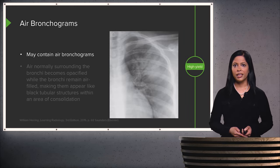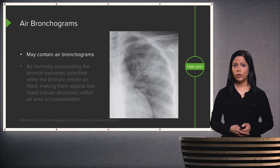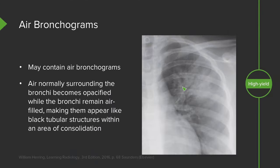Let's go over some signs of consolidation. When you have an area of consolidation, it appears white on a chest x-ray and may contain what we call air bronchograms. The air that normally surrounds the bronchi becomes opacified and appears white, while the bronchi remain air-filled, making them appear as black tubular structures within the consolidation. This area in the left upper lobe shows those linear black tubular structures representing air bronchograms — one of the key features of consolidation.